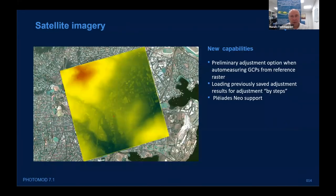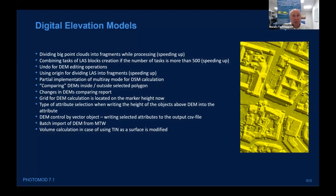Some new features for satellite imagery: preliminary adjustment based on GCPs, support of the new Pleiades Neo sensor, and so on. Regarding digital elevation models: again speed and accuracy improvements, dividing point clouds into fragments to speed up processing, improvements in distributed processing of LAS blocks — now supporting more than 500 tasks — undo for DEM editing operations, batch import, volume calculation improvements.